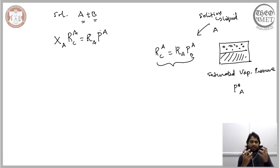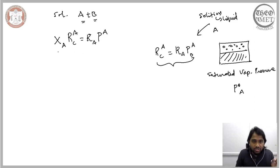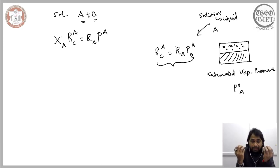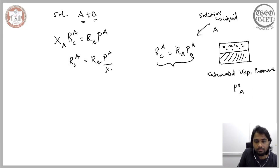So we have two expressions for the condensation rate: one for the A-B solution and one for the complete liquid A. The difference is in the vapor pressure and in the inclusion of the mole fraction x_A. We have now arrived at two expressions for the rate of condensation.